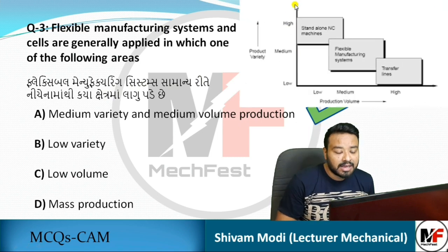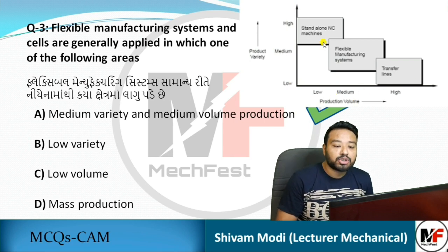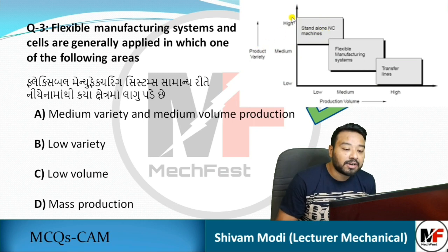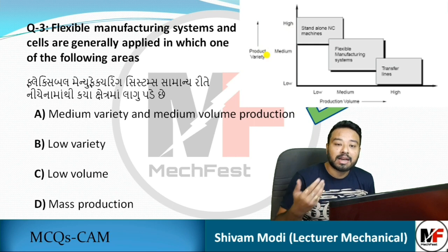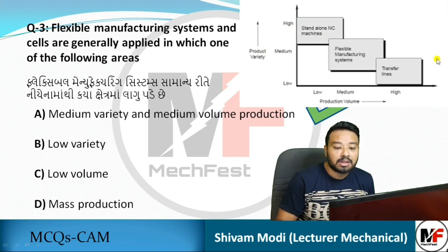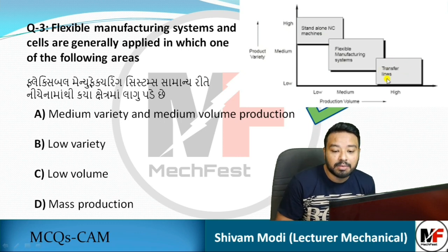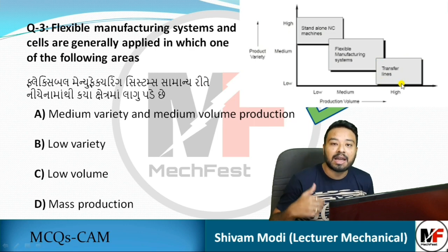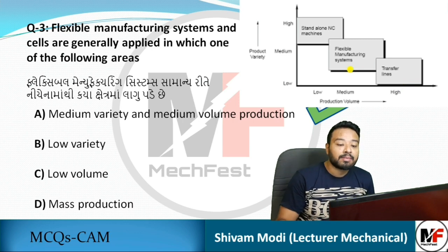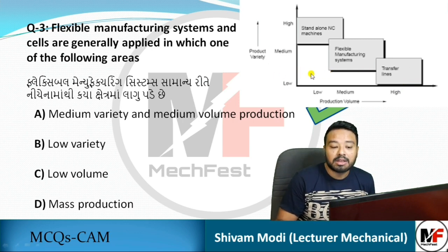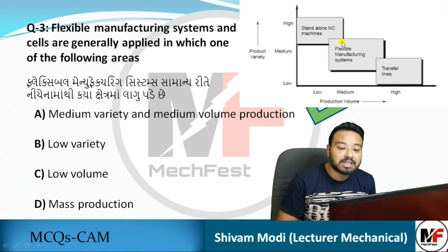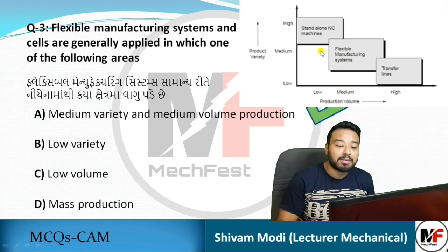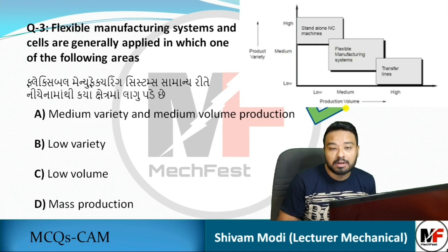Looking at the chart, the Y-axis shows product variety and the X-axis shows production volume. Stand-alone NC machines allow higher product variety with lower production volume. Transfer line concept allows mass production — high production volume — but with very low product variety, typically only one or two products. FMS sits in between, offering medium variety and medium volume.